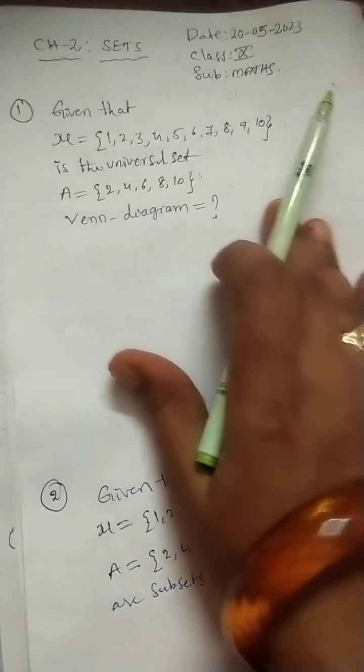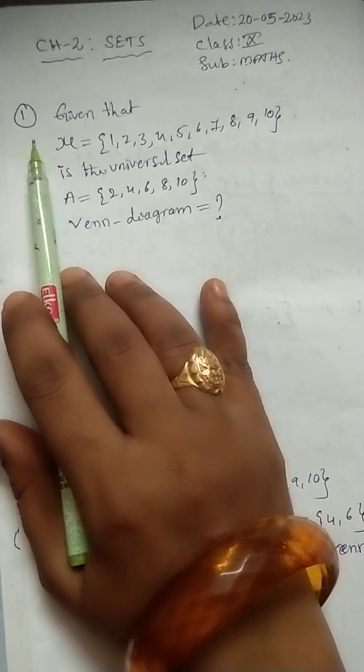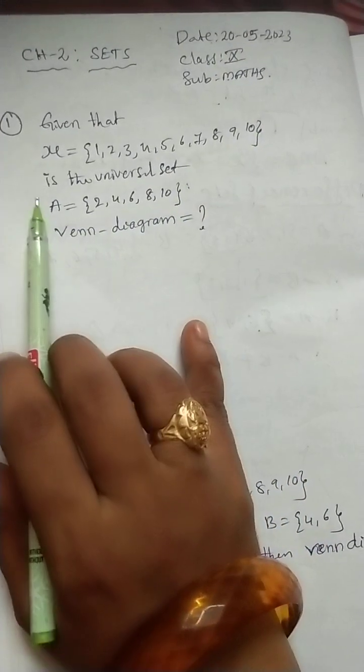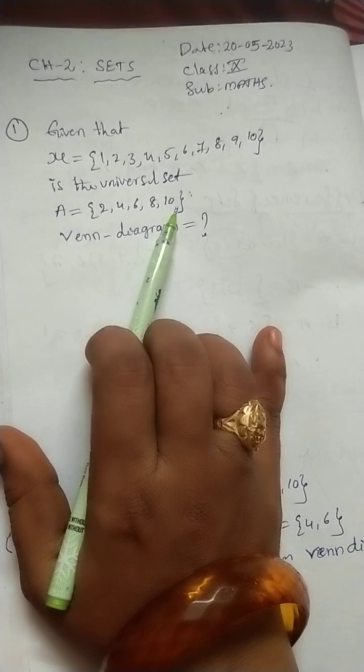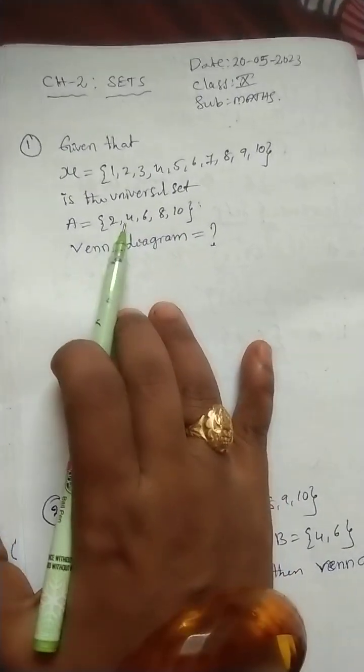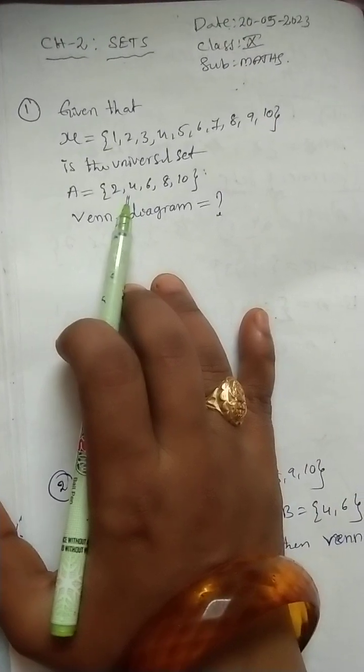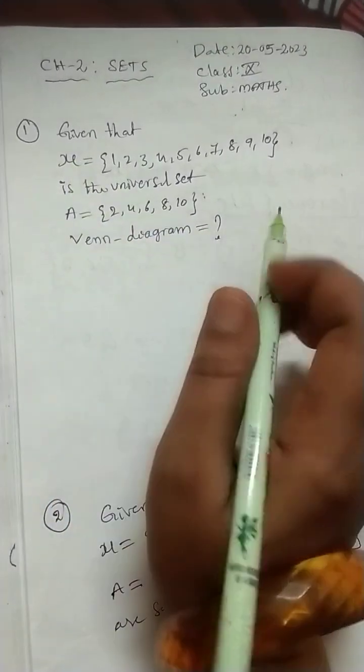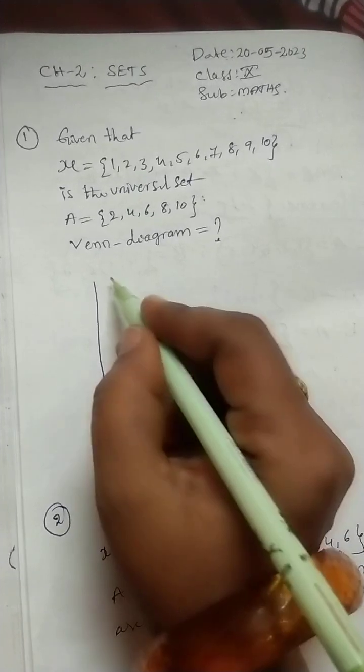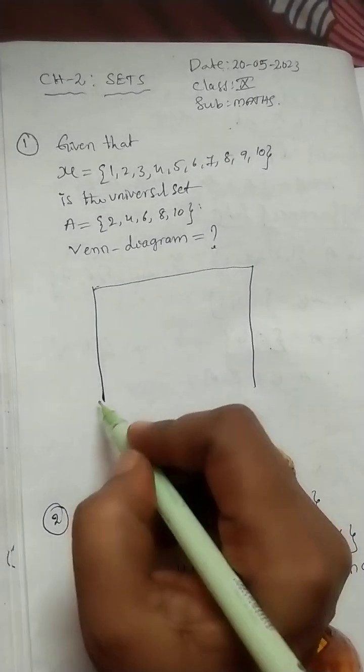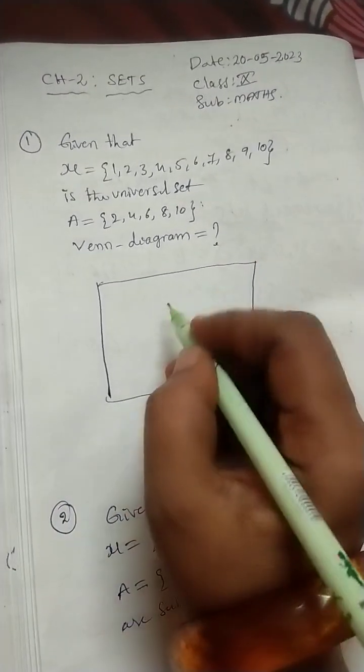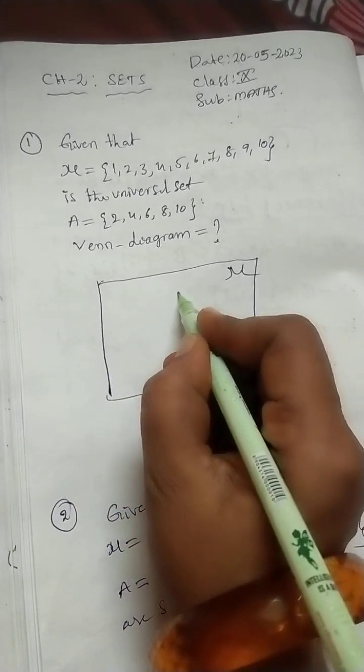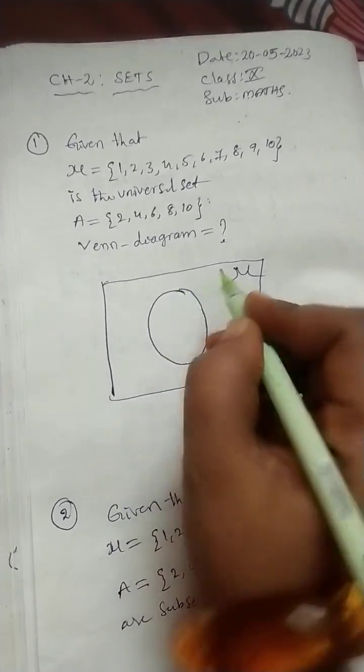Now, how to represent that basic Venn diagrams for the given questions. Let us see. Here, this is the question. Universal set is given, it consists of 10 numbers. A is given, even numbers up to 10. How to draw the Venn diagram for the sets, universal set and set A? Here, always universal set is represented by rectangle. That you should remember.